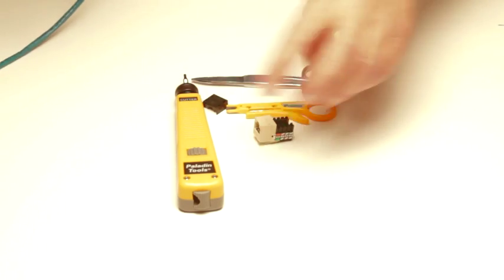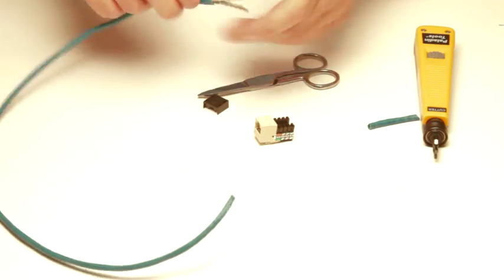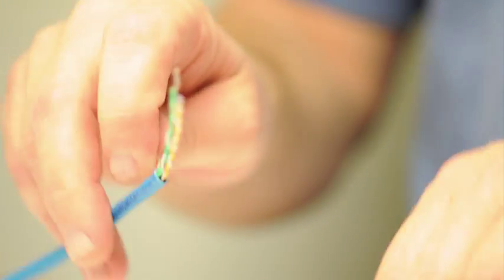The first step is to remove the jacket with the cable strippers. Take your technician scissors and clip the internal string, then begin to fan out the four pairs. You'll notice they are color coded.